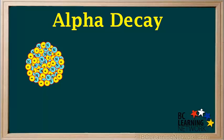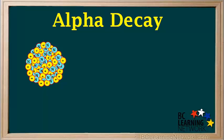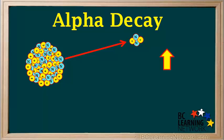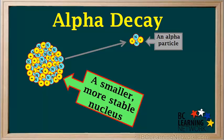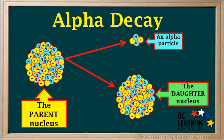When alpha decay occurs, a large unstable nucleus emits an alpha particle. The large unstable nucleus that lost the alpha particle is left as a slightly smaller, more stable nucleus. The process can be summarized in the diagram. The parent nucleus, shown on the left, breaks up into an alpha particle and a daughter nucleus, shown on the right.